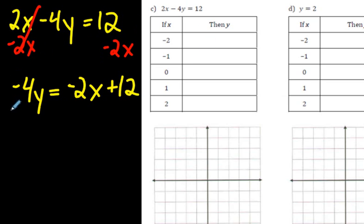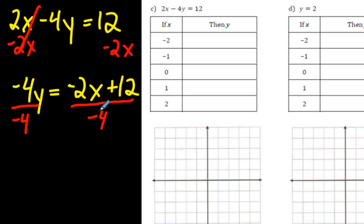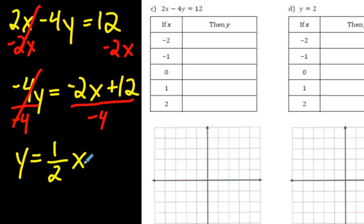The last step is to get rid of this negative 4. When doing these kinds of questions you're doing the opposite of BEDMAS — addition and subtraction first, then multiplying or dividing last. Negative 4 divided by negative 4 gets rid of it, leaving y. On the other side, negative 2 over negative 4 gives a positive fraction: 2 over 4 simplifies to one half. Don't forget the x. And 12 divided by negative 4 is negative 3. So y equals one half x minus 3.